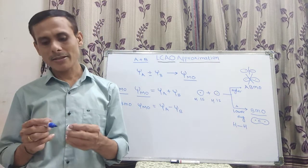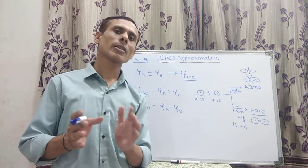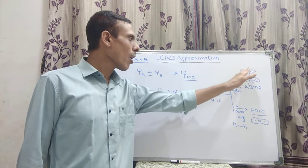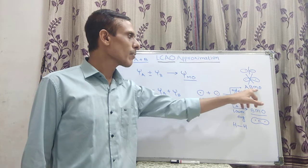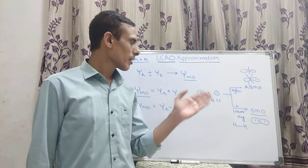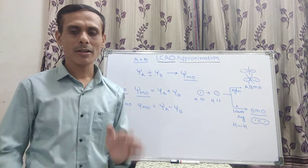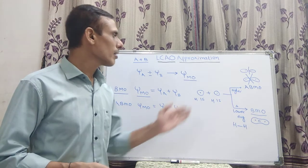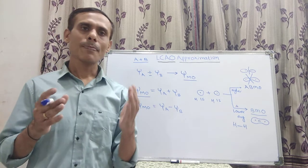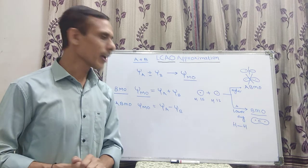Hence, the anti-bonding molecular orbital provides an unfavorable situation for the formation of a bond between the two atoms. There is no formation of bond in anti-bonding molecular orbitals — it provides an unfavorable situation. So this is all about the LCAO approximation, bonding molecular orbital, and anti-bonding molecular orbital.